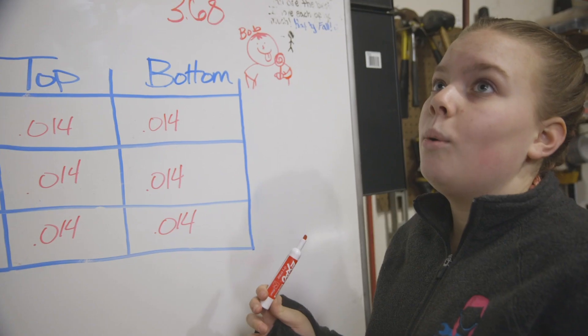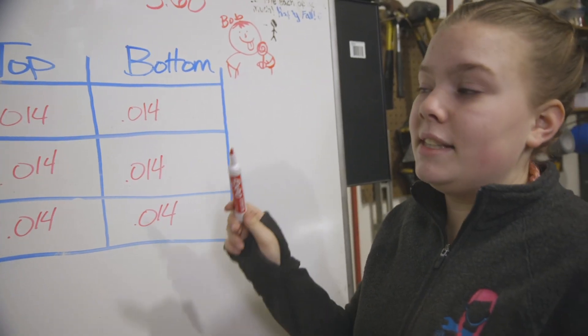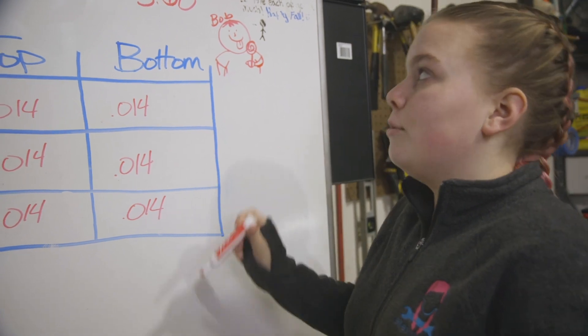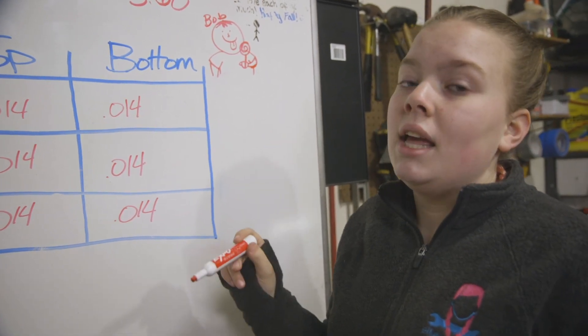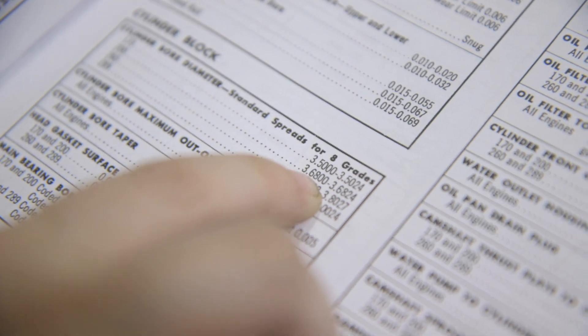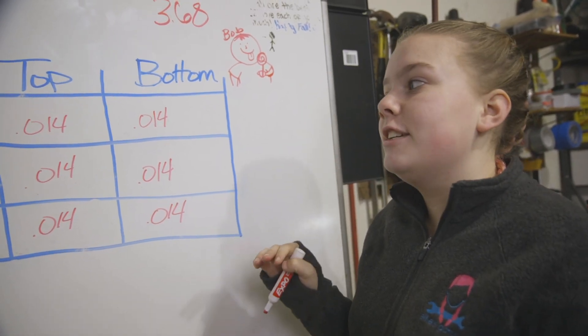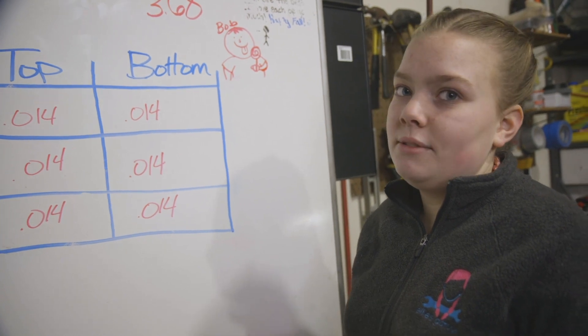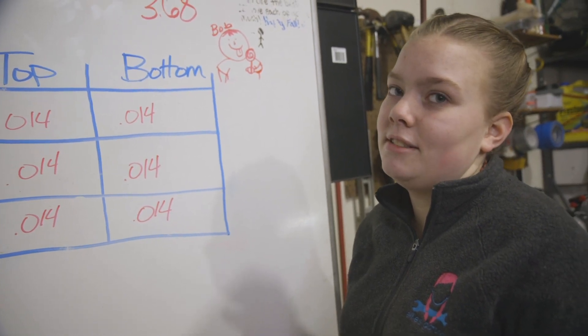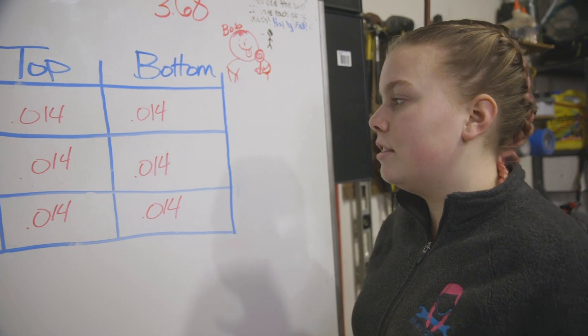Which is not good, because in the manual it says that it can't be any bigger than 3.6824. So we're a little over, which probably means we're going to have to take it to the machine shop. Well, let's take the rest. But we're going to check the rest.